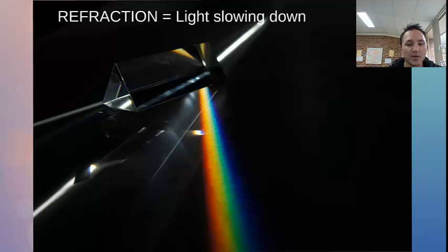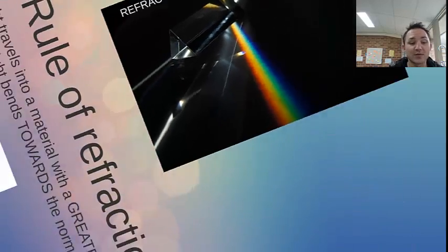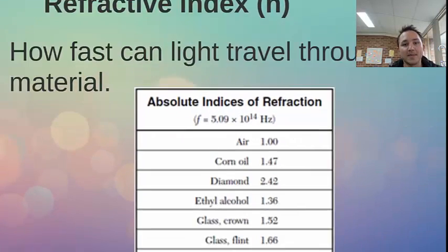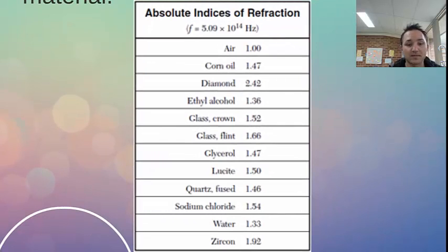So when we look at refraction, we can actually give different materials indexes, so refractive indexes, of how fast light actually can travel through the material or how much it bends. So here is a table of them. Air is at 1.00 refractive index, where things like glass are bigger, and diamond is 2.42, which is the largest on that scale.